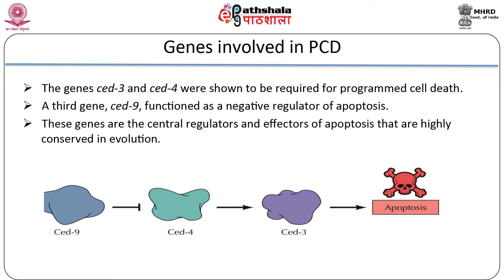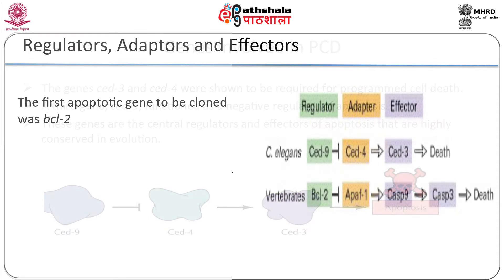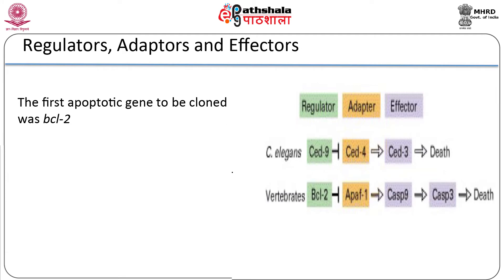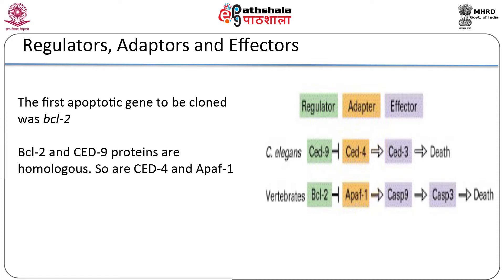Apoptosis involving an evolutionarily conserved pathway was first suggested by the convergence of genetic studies in worms and studies on human cancer cells. The first apoptotic gene to be cloned was BCL2, isolated as a breakpoint rearrangement in human follicular lymphomas, and was shown to act as an oncogene that promoted cell survival rather than cell proliferation. Not only are the BCL2 and CED9 proteins homologous, but a BCL2 transgene can block the extensive cell death found in CED9 mutant worms.